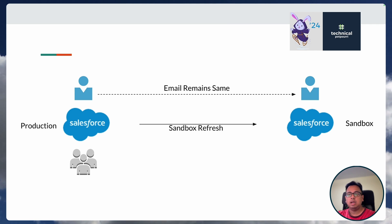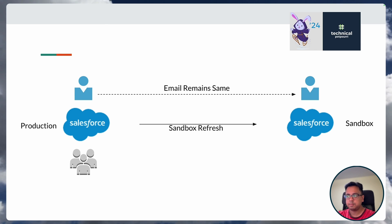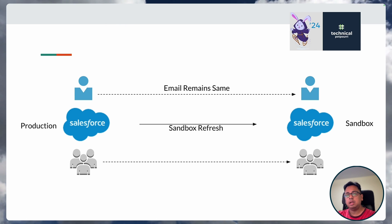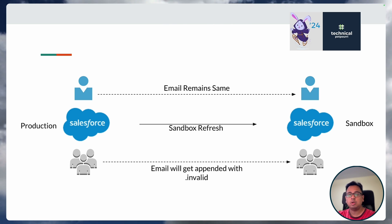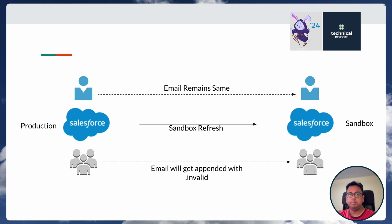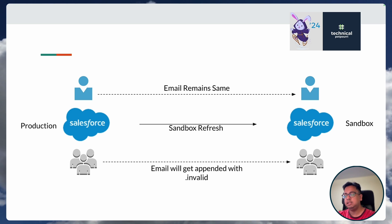What about the other people in the production org — all the active users? When the new sandbox is created or refreshed, there will be an account for them in the sandbox. But the problem is that they will not be able to log in because their email address will be appended with dot invalid. So if someone's email address is abc@gmail.com in production, that person's email address will be converted to abc@gmail.com.invalid in the sandbox.